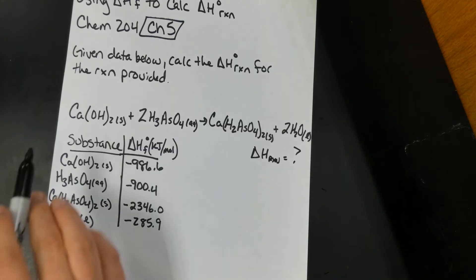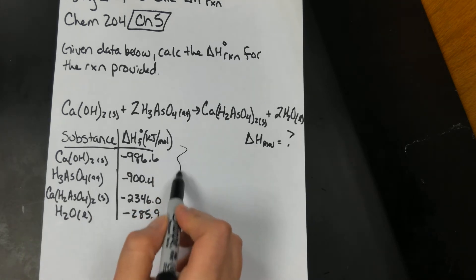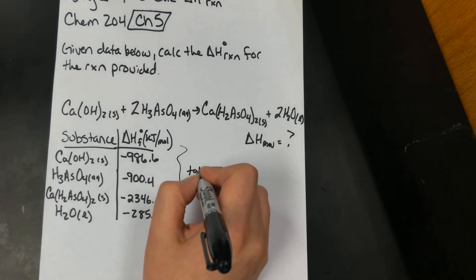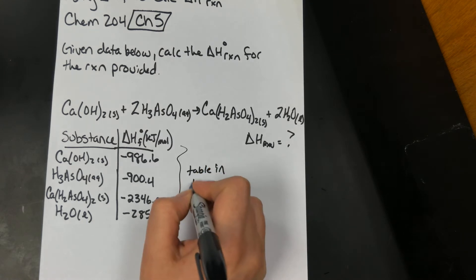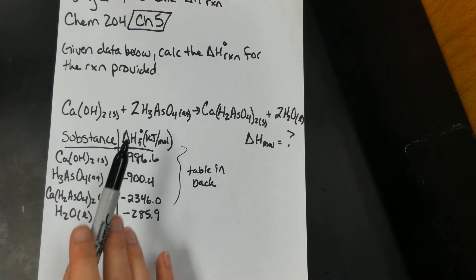So they give me this big reaction and then they give me these knowns. You'll find that a lot of these are in the table in the back, but for an exam they'll probably give them to you. These are absolutely known enthalpies of formation.